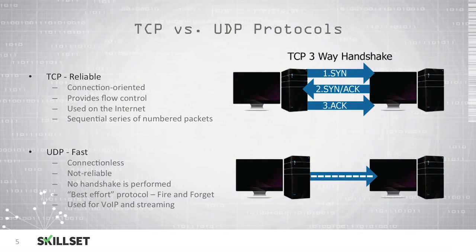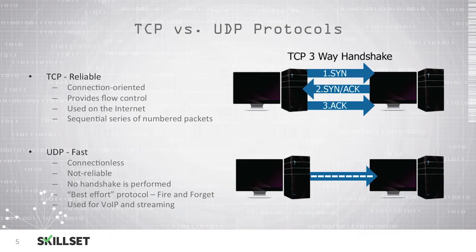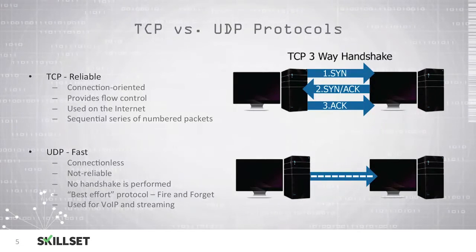It is important to understand the difference between TCP and UDP. TCP is very reliable. It is a connection-oriented protocol that is concerned with making sure that data gets to the other side correctly without any errors and making sure that the other system is receiving it properly. It uses flow control to make sure that it is flowing the correct amount of data, and it is commonly used on the internet. TCP transmits data in a sequential series of numbered packets.